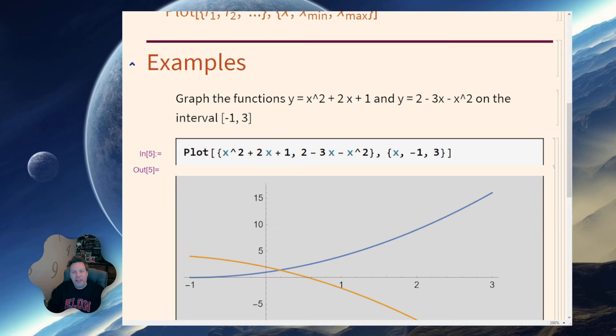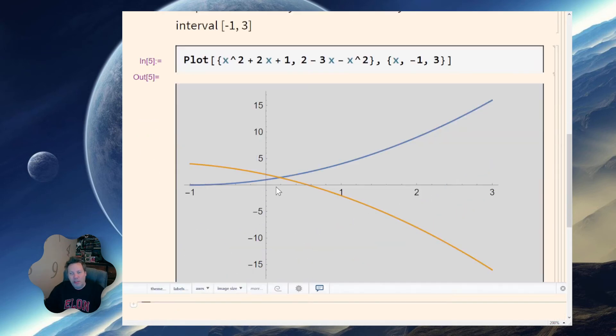I'll do a shift enter and I wind up getting my two functions. Now when I'm looking at this, a lot of times I'm going to want to find a picture where I look at all the intersection points. I'll have a video on how to figure out intersection points in the solve command series. What I'm doing here is I'm looking at this particular plot and I notice that I have a parabola up and a parabola down, and they intersect right here, but over to the left I believe they intersect again.